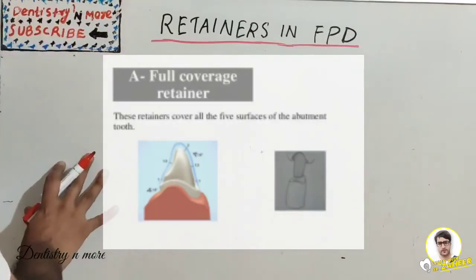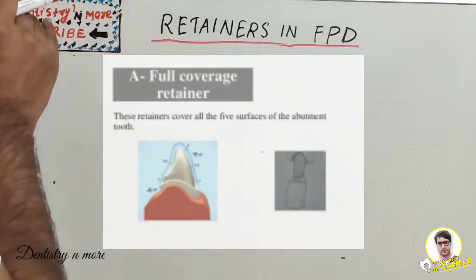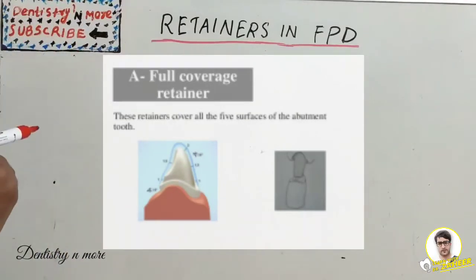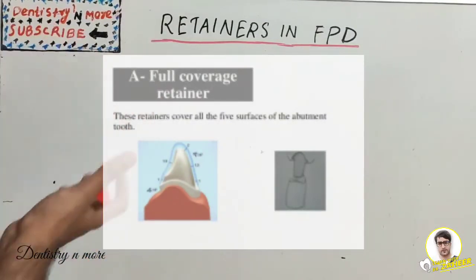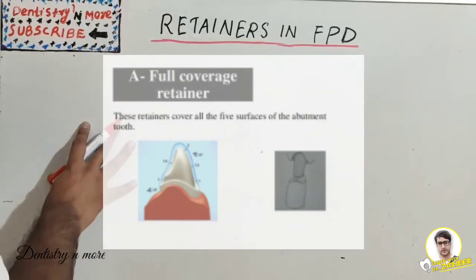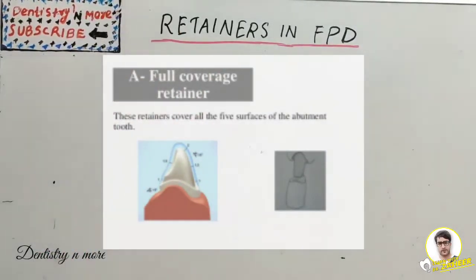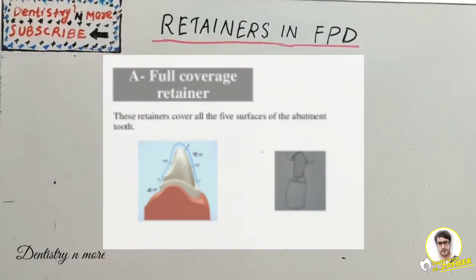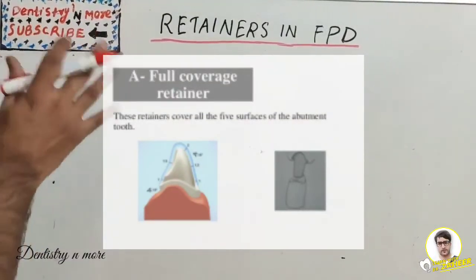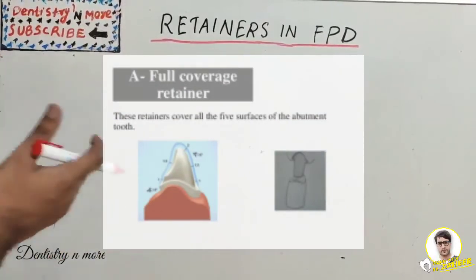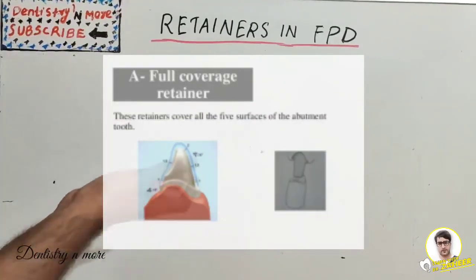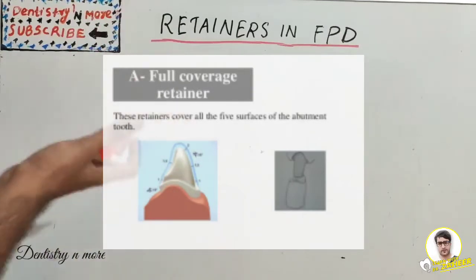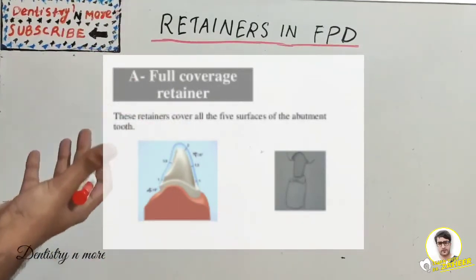The problem with full coverage retainers is that extensive tooth preparation is needed, the finish line should be kept subgingivally causing tissue response, and gingival decay is prevalent. Aesthetic concern exists for metal crowns in posterior teeth. Full crowns are indicated in short clinical crowns, patients with active caries and poor oral hygiene, and in both vital and pulpless teeth. Metal ceramic and all ceramic crowns are used when good cosmetic results with maximum resistance and retention are required.